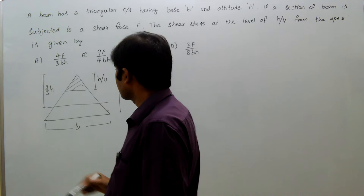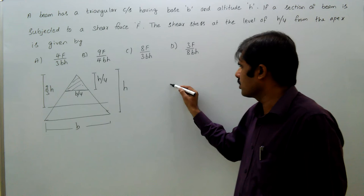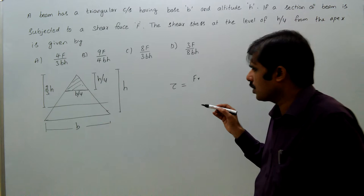Now, the width here is, of course, B by 4. So now, shear stress at that location equals shear stress equals F into Q. Q is moment of that shared area about the neutral axis.